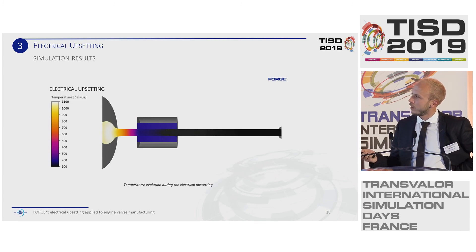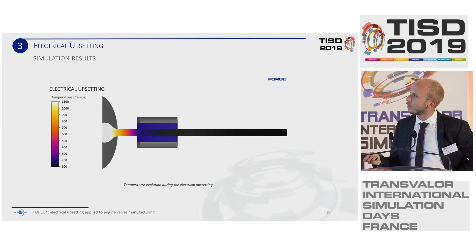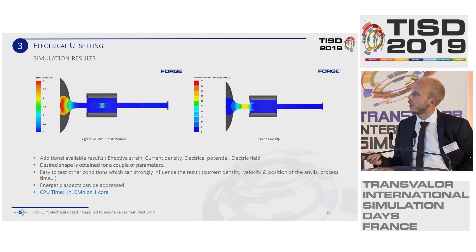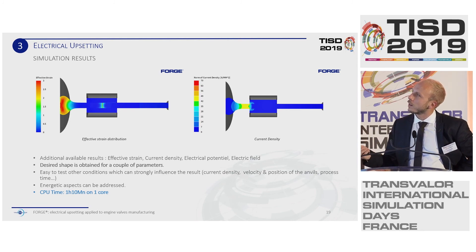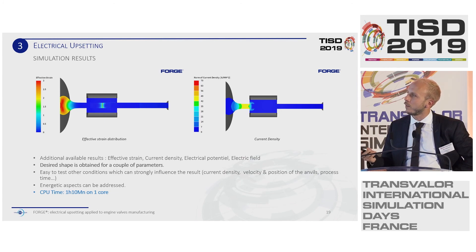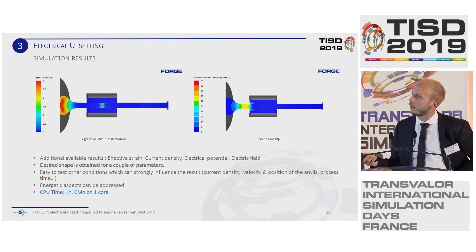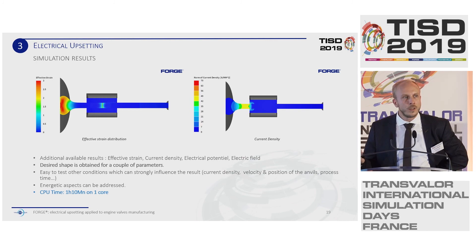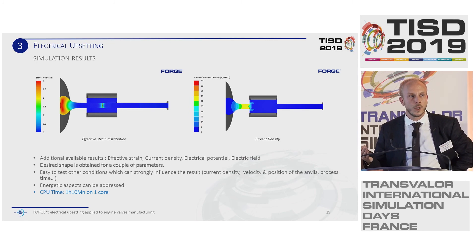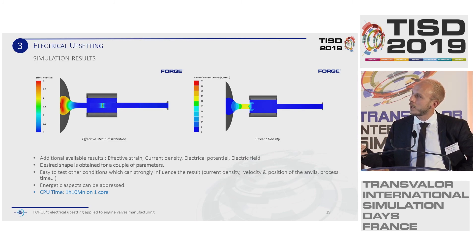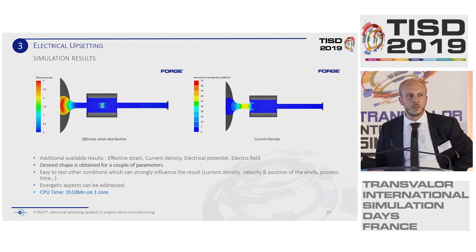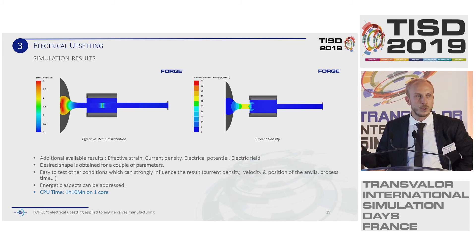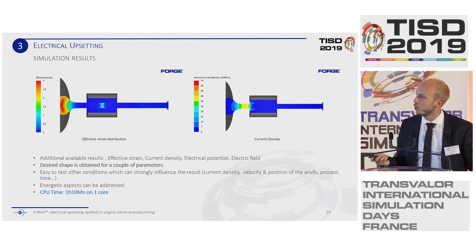Here you have the animation of the electrical upsetting process showing the temperature evolution. You can also analyze results such as effective strain, current density, electrical potential, and electrical field. Obtaining the right preform shape is challenging because it depends on all the parameters: the current, the force, and the movement of both anvils. This shape was obtained for a specific set of parameters. It is easy to study the influence of each parameter by copying the setup and running other simulations. The preform shape is very important to guarantee a good final forging operation. This computation took around one hour on one core.